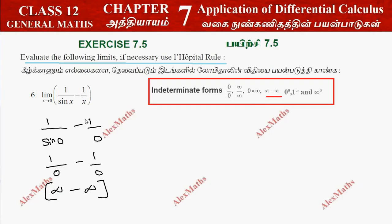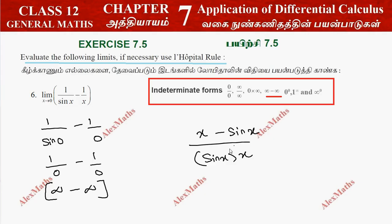So we need to simplify first, then apply the limit. We take the LCM, which is sin(x) into x. The combined numerator becomes x minus sin(x), giving us the expression (x - sin x) / (sin x · x).